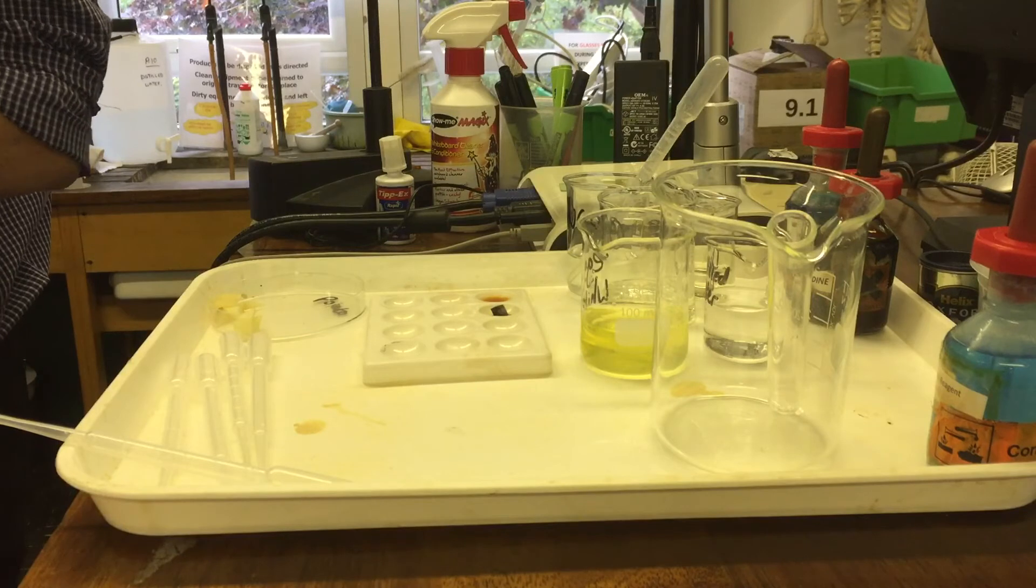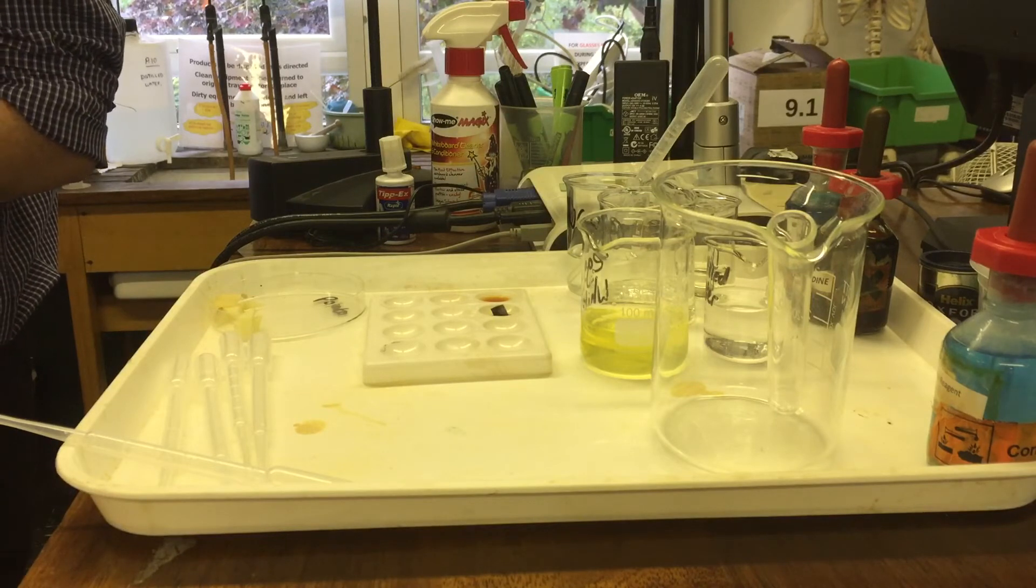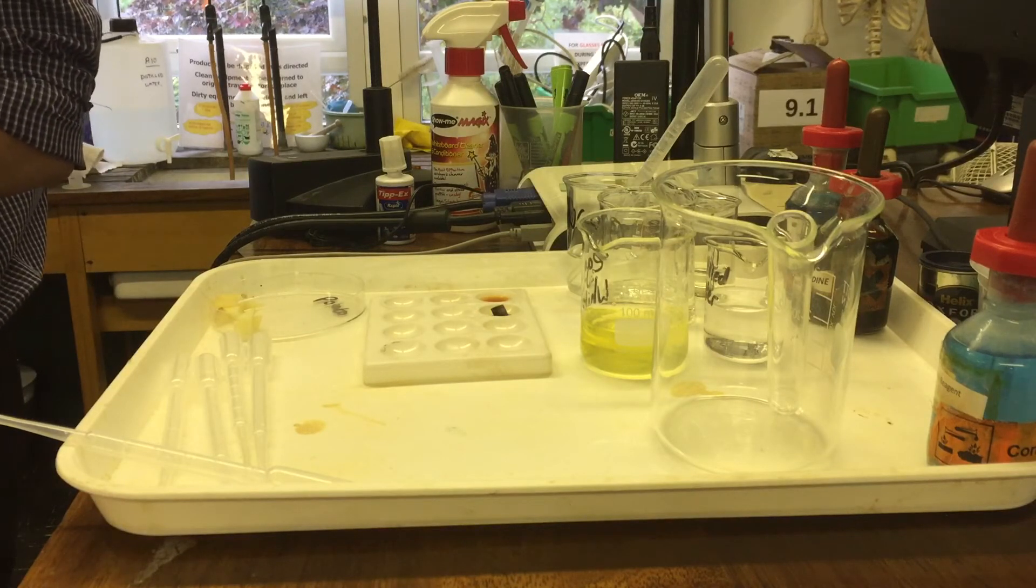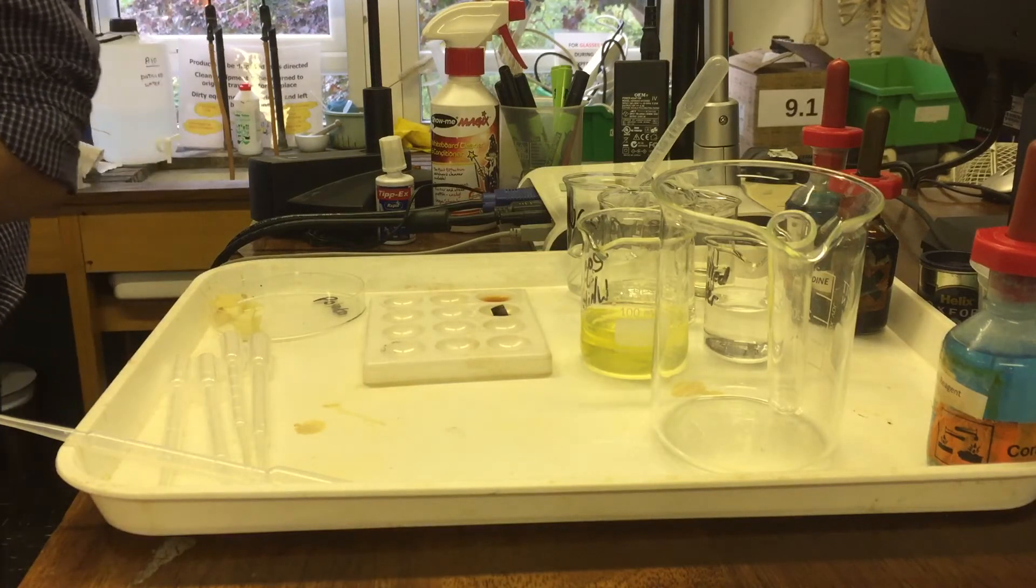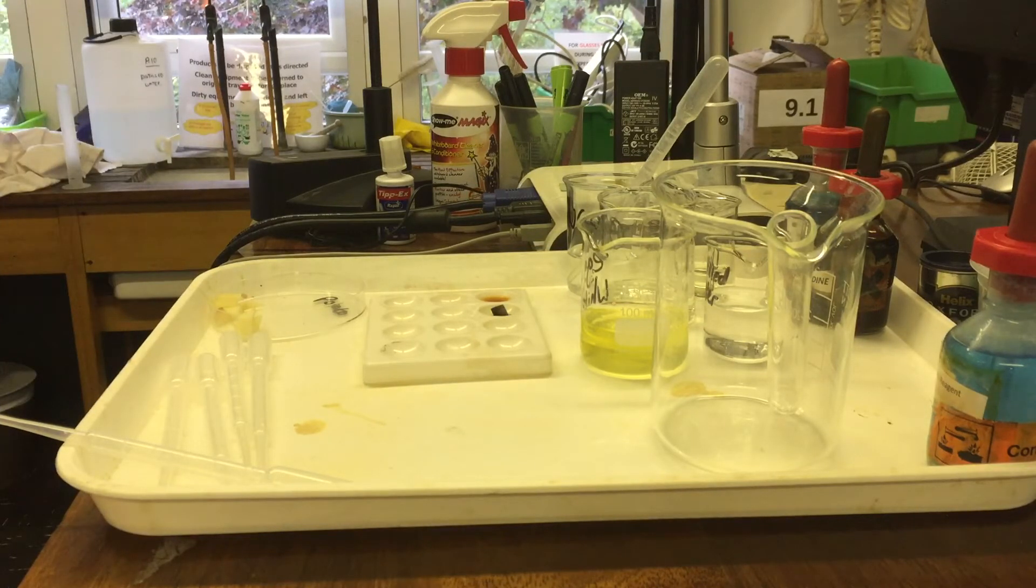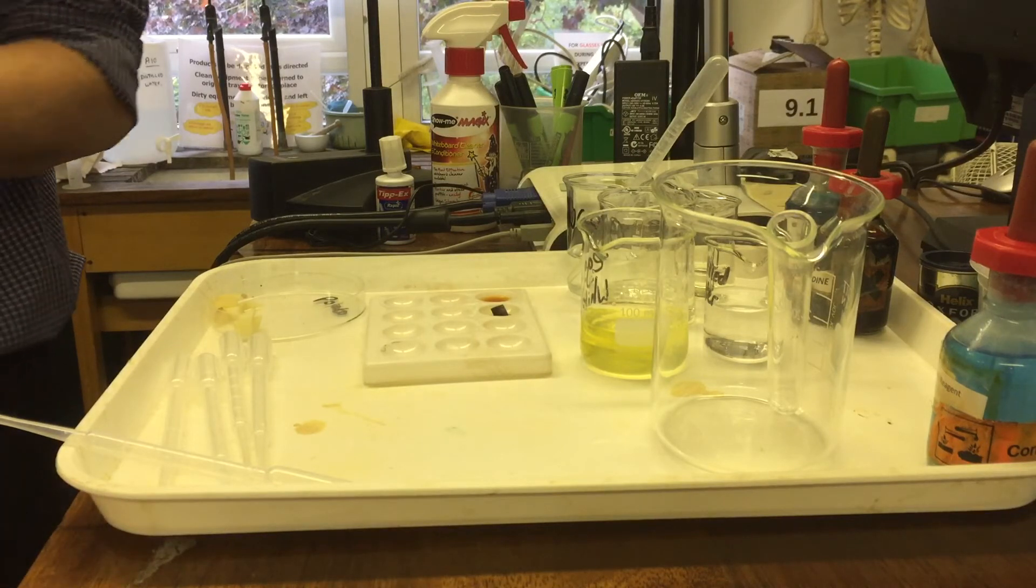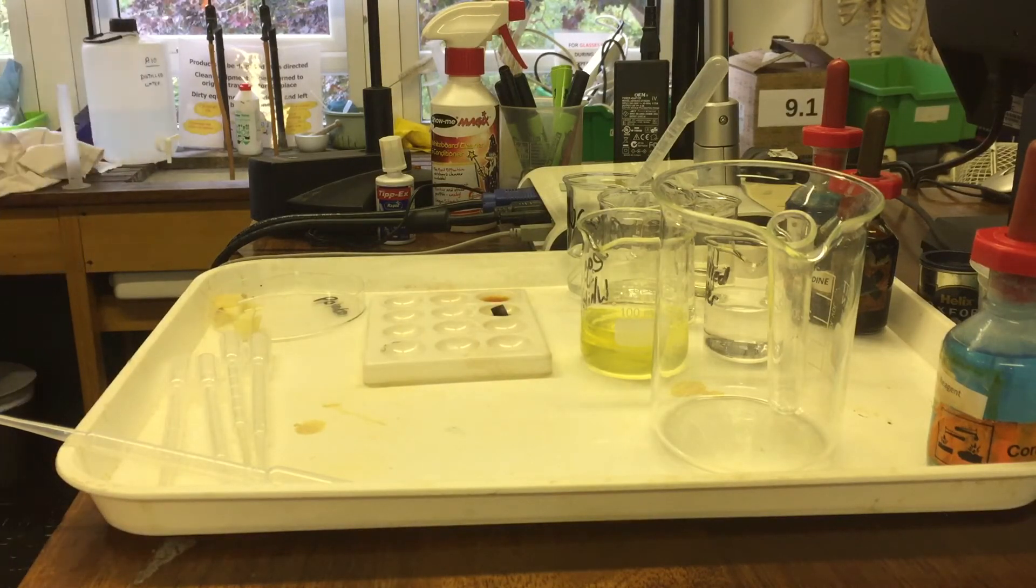So why turn it to starch? What's the purpose of turning it to starch? To store it. Well done. Because when does a plant not photosynthesize? At night. Or less in the winter. But when things don't have leaves. So trees with no leaves will be using starch. So that's our starch test.